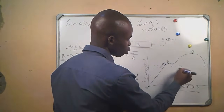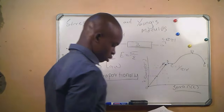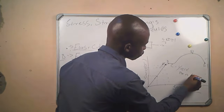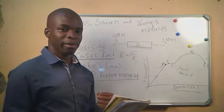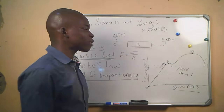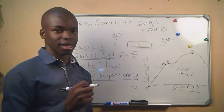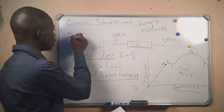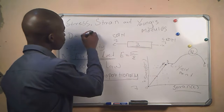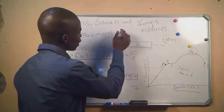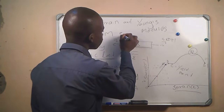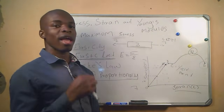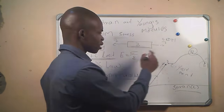Point C is called the yield point. The yield point is the point where stretching in the material will take place without any further force being applied to the material. Point D is the point of maximum stress — that is where we have our maximum stress on the graph.